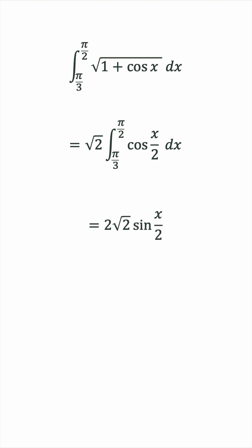Now we apply the bounds, pi over 3 to pi over 2. That will give us sine pi over 4 minus sine pi over 6.